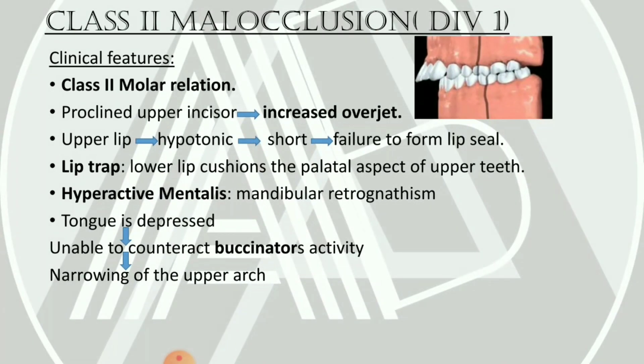Moving on to Class 2 malocclusion, which is divided into two types: Division 1 and Division 2. In Division 1, the molar relationship is Angle's Class 2 type — the mesiobuccal cusp of the maxillary first molar occludes anteriorly to the buccal groove of the mandibular first molar. Additionally, in Class 2 Division 1, the upper incisors are always proclined.